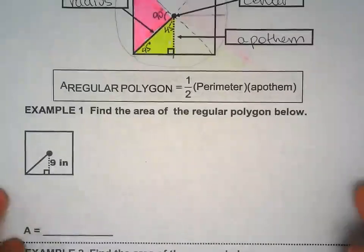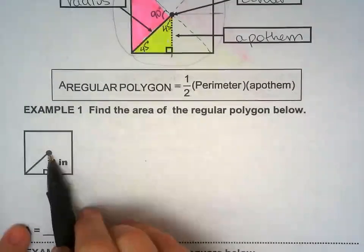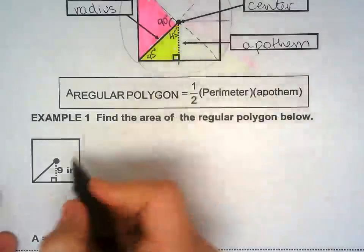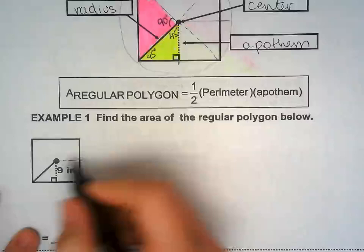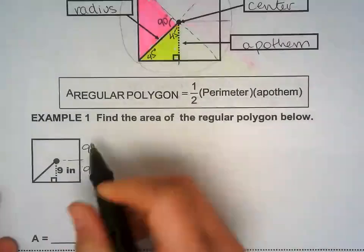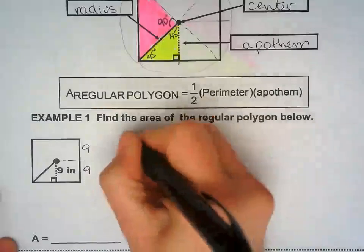So find the area of a regular polygon. This, they give you the apothem. And like I told you on the example right here, or definition right here, the apothem is half of the side. If this is 9, this is 9. That makes the side 18.